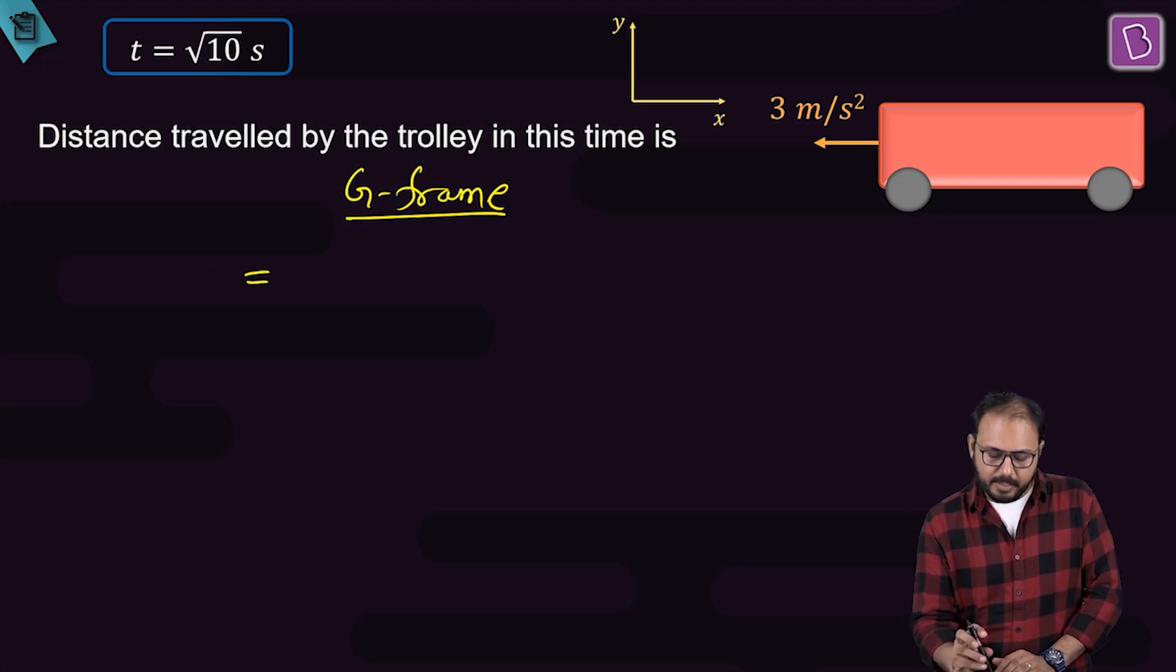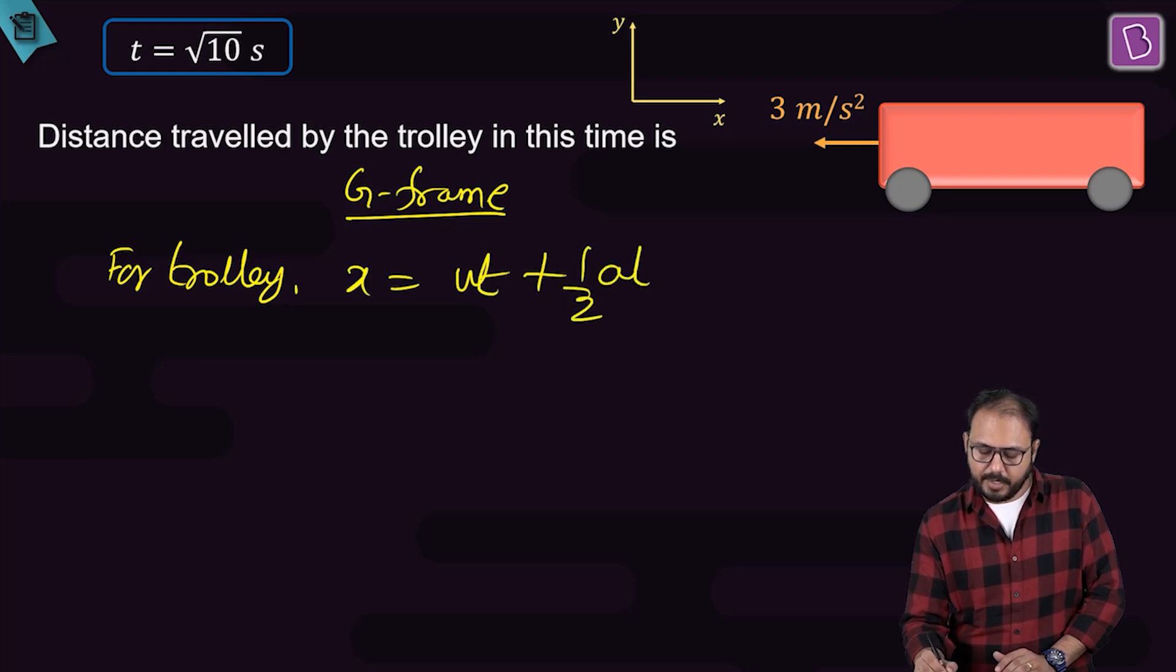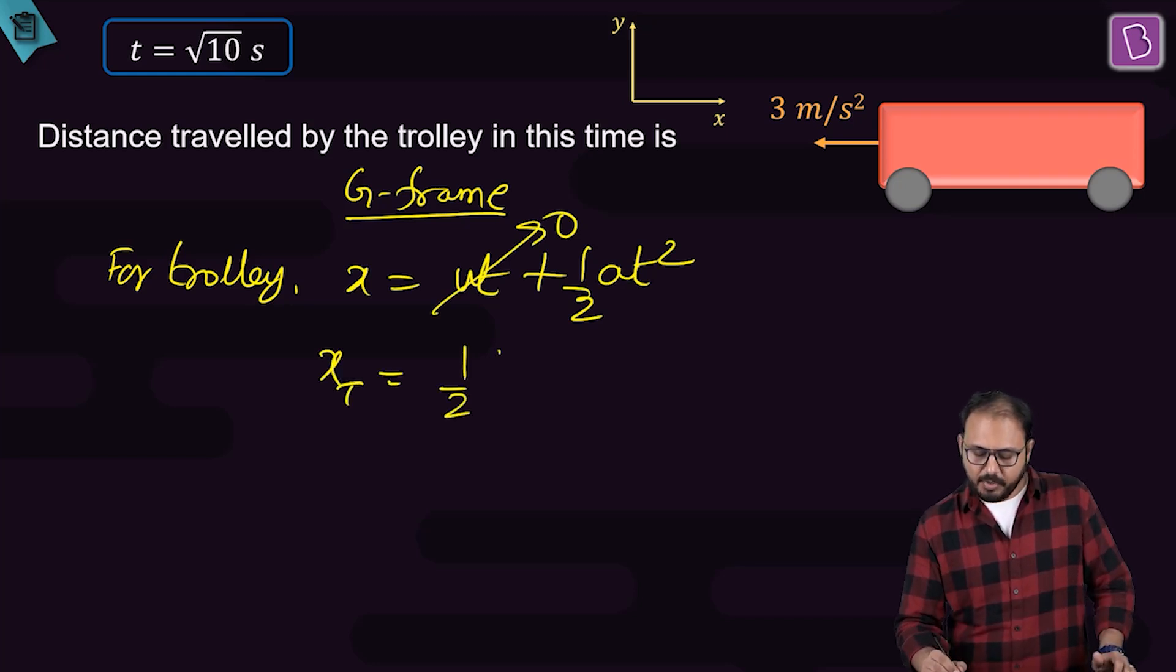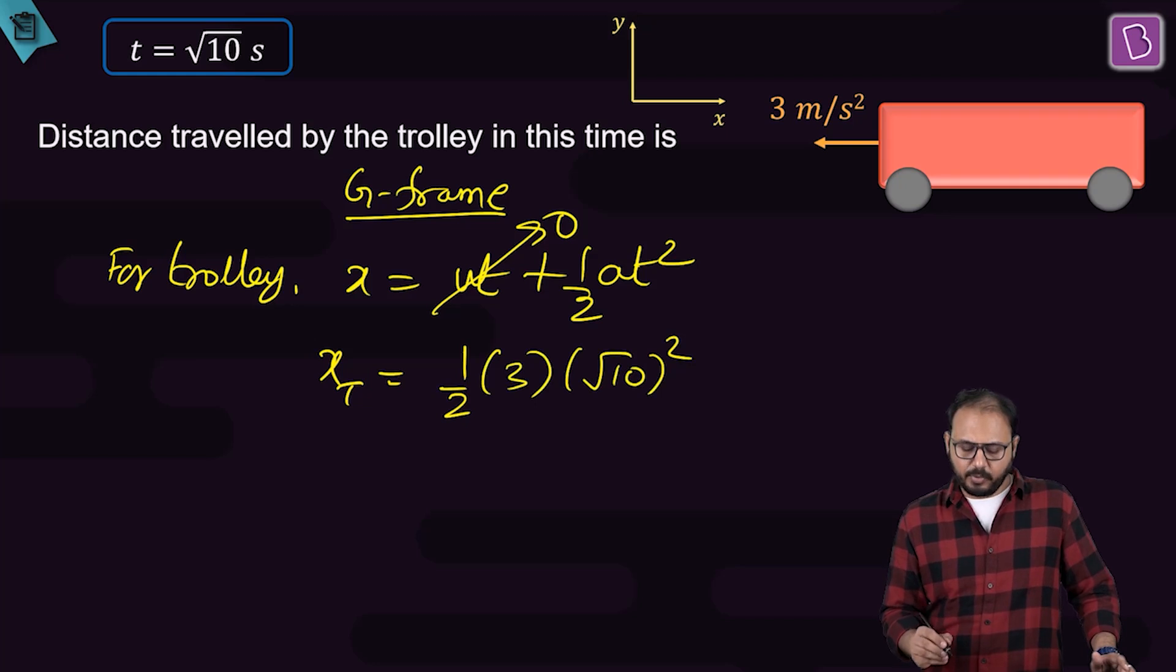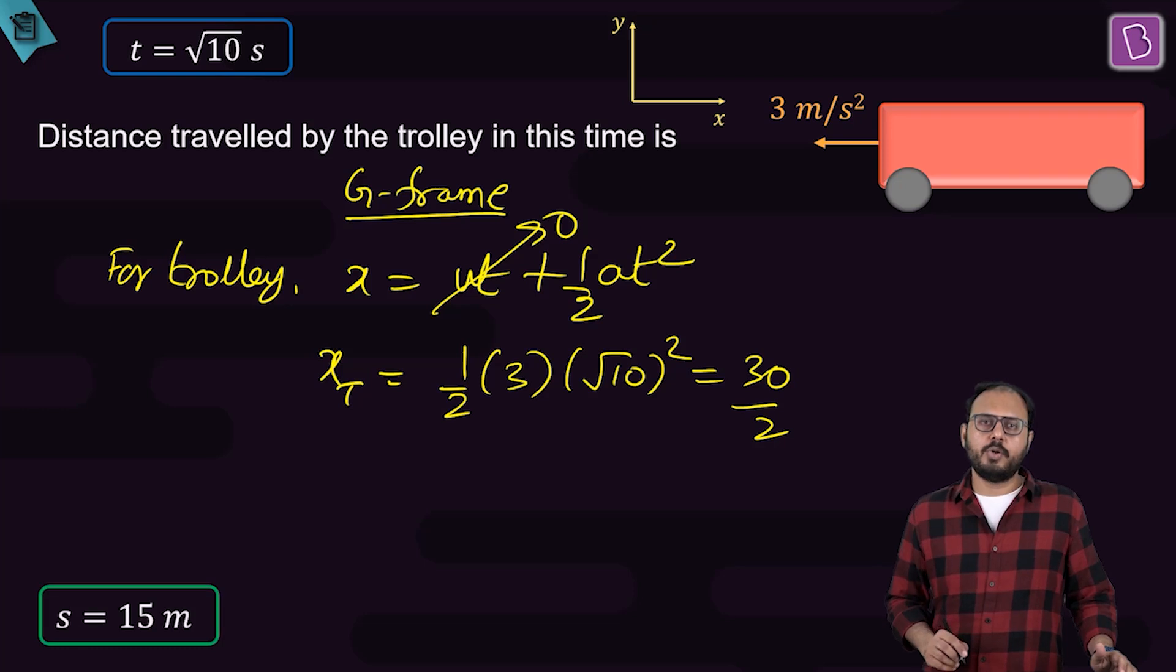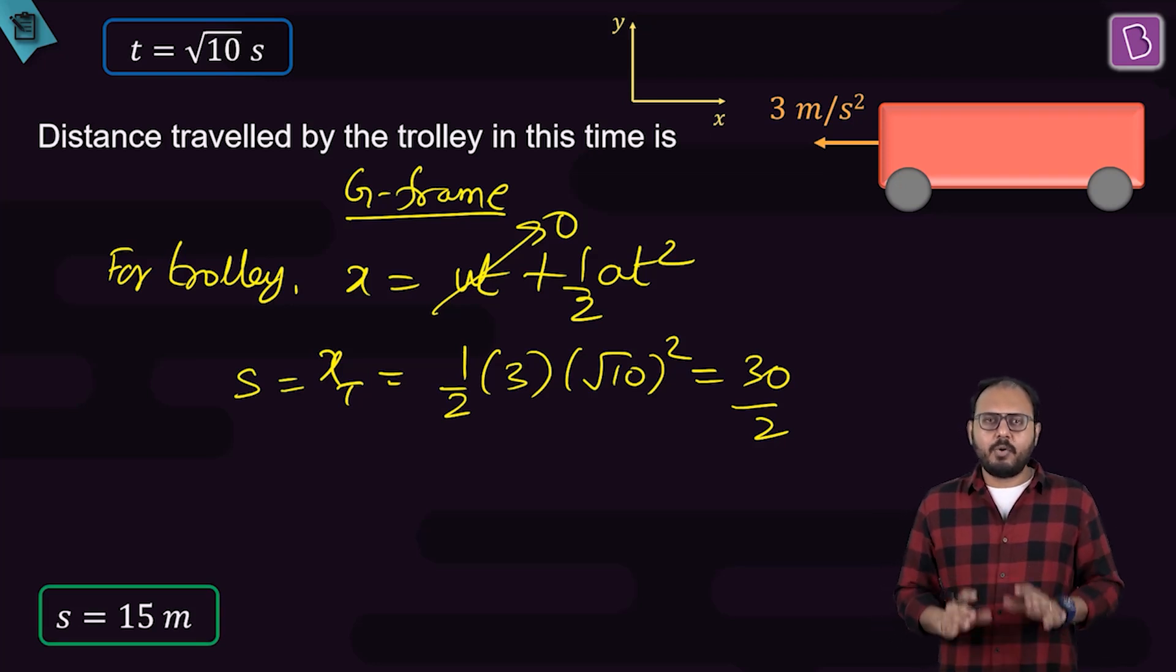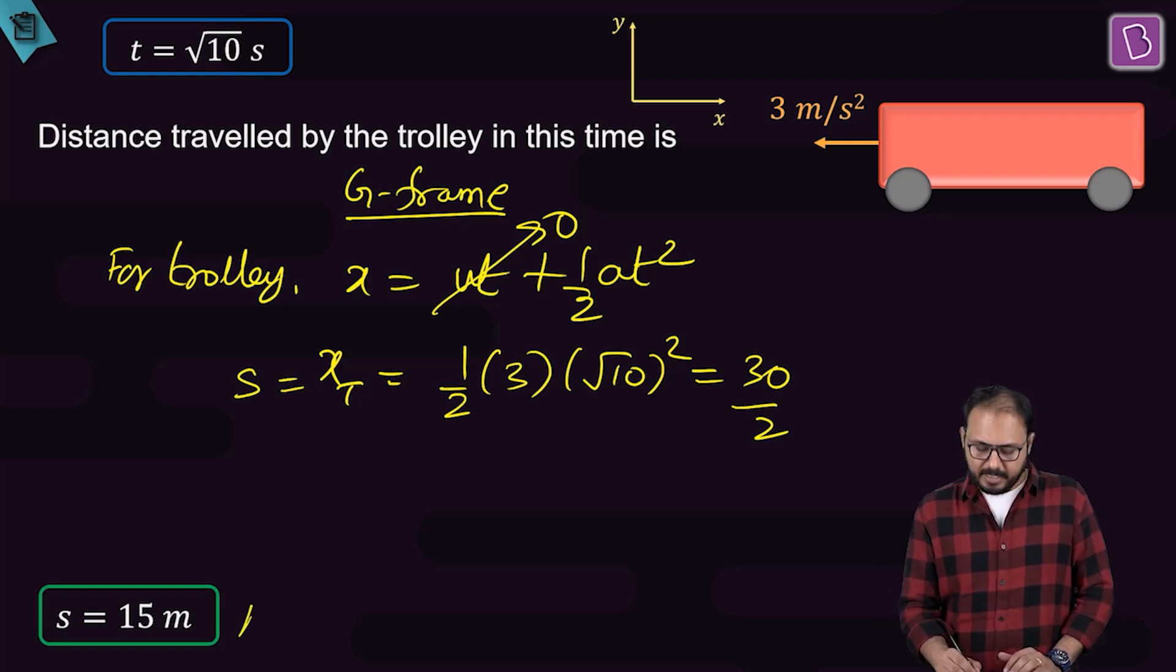This time, x trolley. Equation is x equal to ut plus half A t square. So for trolley, x is ut plus half A t square. Initial is 0. What is the acceleration of trolley? 3. And what is the time? Root 10 square. What is root 10 square? 10. 10 into 3 by 2. You have a 30 upon 2 situation, which is equal to 15 meters. Or the distance covered by the trolley in ground frame in that time when the block slips off of it is 15 meter final answer.